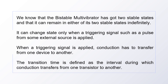Whenever some external triggering signal is applied, conduction has to transfer from one device to another — from one transistor to another. The ON transistor will become OFF, meaning conduction is transferred to another transistor. So to transfer conduction from one device to another device, it will take some time.